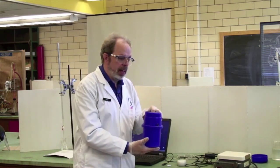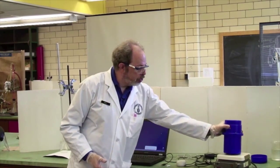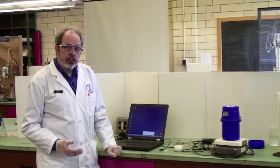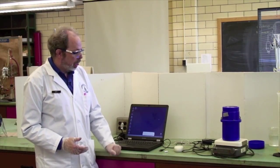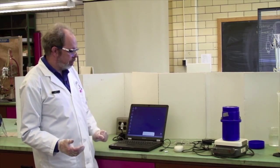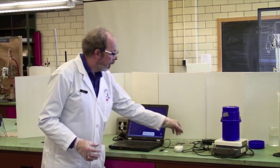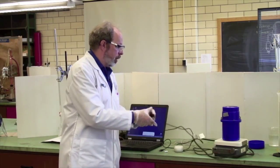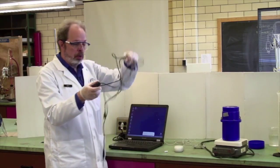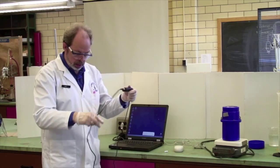The calorimeter is a dewar flask or thermos flask. It sits here and should sit on top of a stirrer plate. You are monitoring the temperature using a laptop. These are somewhat ancient, they are not quite as old as you, but they are getting on that way.